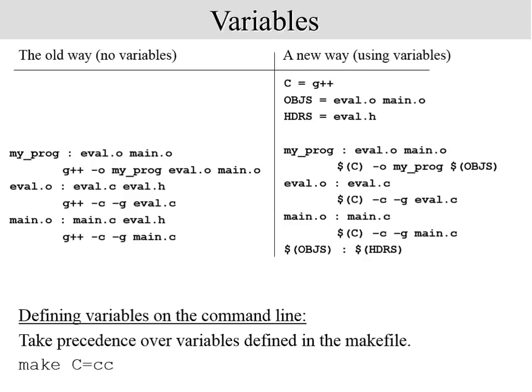This is convenient because if you want to replace the G++ compiler with cc, all you need to do is change that one variable. In fact, you don't even have to change it inside the make file — you can define it on the command line as 'make CC=cc' and it automatically replaces everything with cc, taking precedence over the variables defined inside the make file.